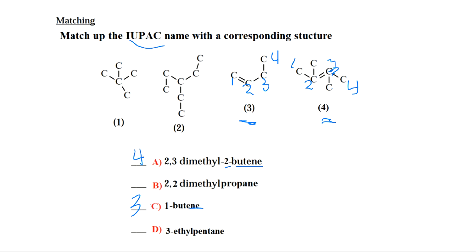Now structure two. Number it: one, two, three, four, five — wherever you start numbering, you get the same name. You have a substituent on carbon three that has two carbons, so it's an ethyl group. It's 3-ethylpentane. Structure two goes to D.